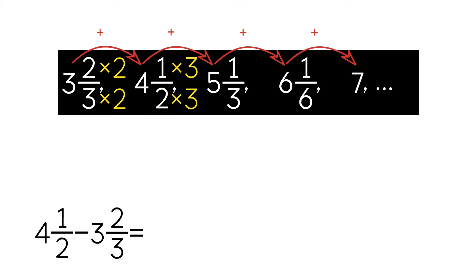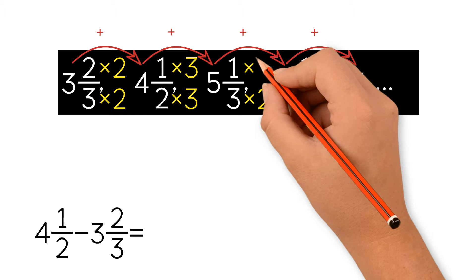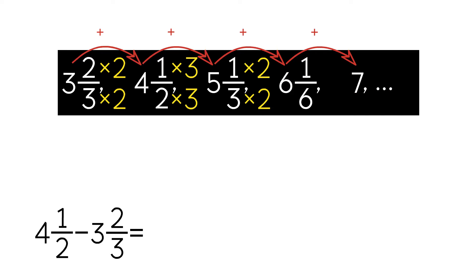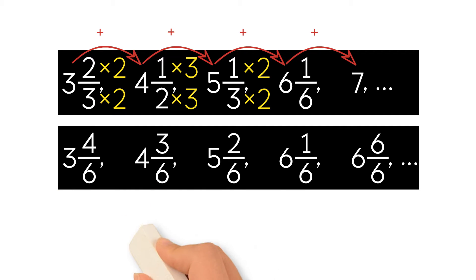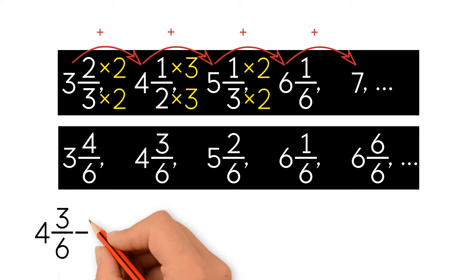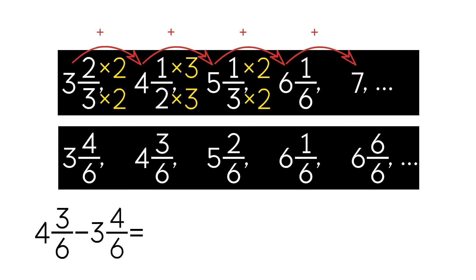For 5 and 1 third, we multiply the denominator and the numerator by 2. We leave 6 and 1 sixth the same because the denominator is already 6. Now we can rewrite the mixed numbers with the equivalent fractions. Instead of subtracting 3 and 2 thirds from 4 and 1 half, we subtract 3 and 4 sixths from 4 and 3 sixths.